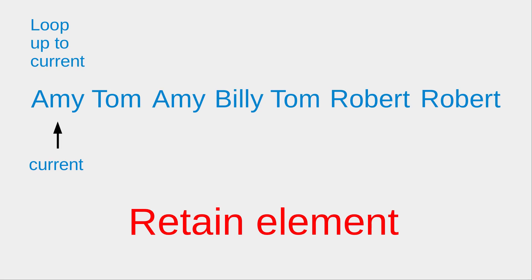Let us see an illustration. Suppose I have the following ArrayList of names. If I want to do the removal, I would like to set up an index called 'current', which refers to the first element in the ArrayList. I would like to loop over the elements from the very beginning to the element indicated by the current index. So for now, Amy is simply the only element that is looped over. I would remain this element because there are no repeated elements before it.